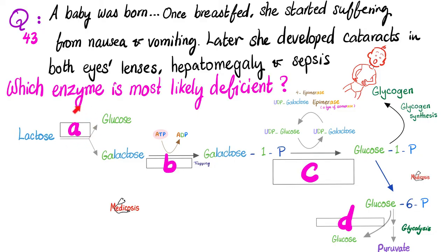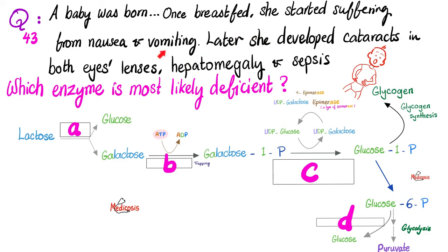Enzyme A breaks down lactose into glucose and galactose — it's lactase, which is deficient in lactose intolerance. Enzyme B converts galactose into galactose-1-phosphate — it adds a phosphate, so it's galactokinase. Enzyme C converts galactose-1-phosphate into glucose-1-phosphate — it's galactose-1-phosphate uridyl transferase. Galactokinase deficiency causes mild galactosemia. Galactose-1-phosphate uridyl transferase deficiency causes severe or classic galactosemia. These severe symptoms belong to the severe form, making C the correct answer.